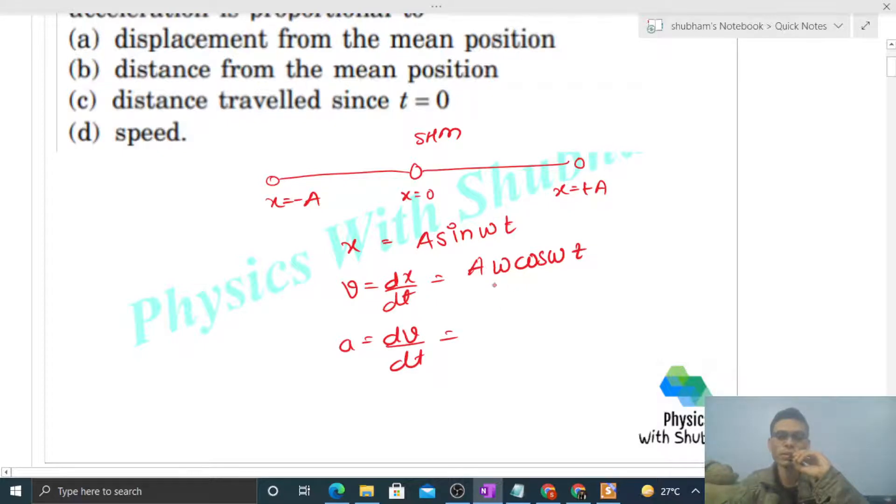Now acceleration will be dv by dt. So differentiate velocity with respect to time. A omega is constant, cos omega t differentiated will be minus sin omega t, and A omega squared remains. So you see, sin omega t into capital A, that is x. So omega squared, and this minus into x. So acceleration is directly proportional to x coordinate of the particle.